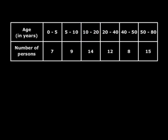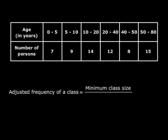So what we need to do is, we need some parameter which will have the same effect as a class size that is uniform. How do we do that? Well, that parameter is called adjusted frequency of a class and this is how we calculate it. Minimum class size divided by class size into frequency. Once you have done that, drawing the histogram will be easy.